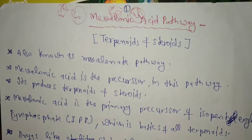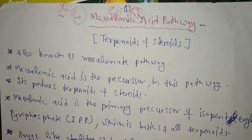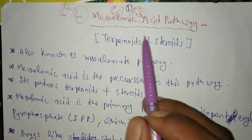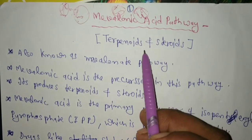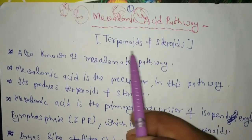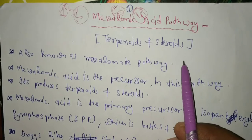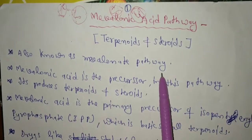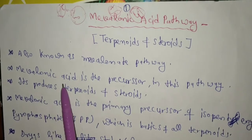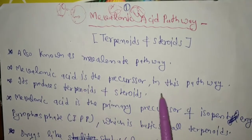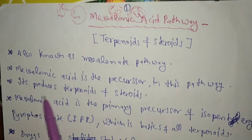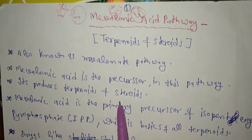Hello friends. Today we will discuss in Pharmacognosy the mevalonic acid pathway. In the mevalonic acid pathway, biosynthesis of terpenoids and steroids occur. Also known as the mevalonate pathway. Mevalonic acid is the precursor in this pathway; it produces terpenoids and steroids.